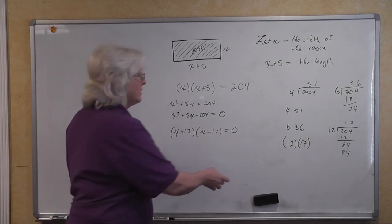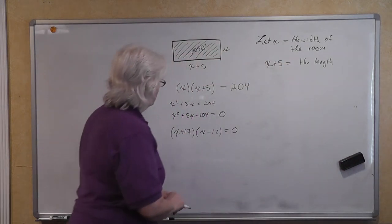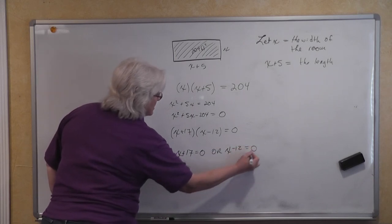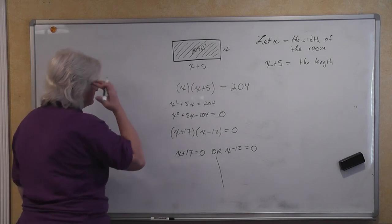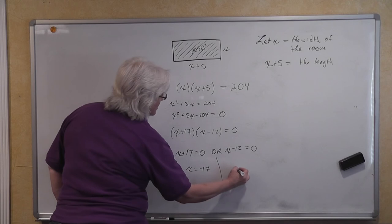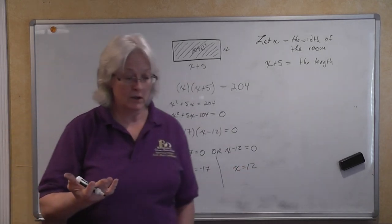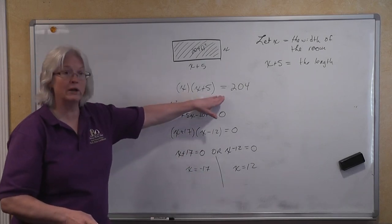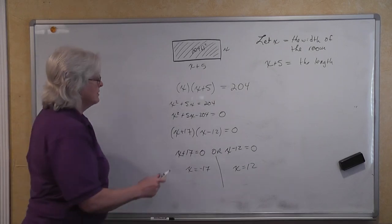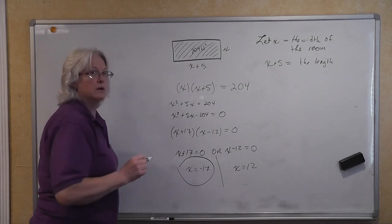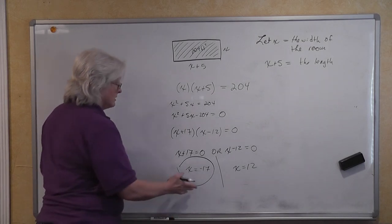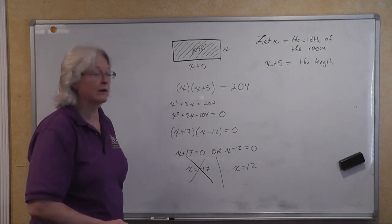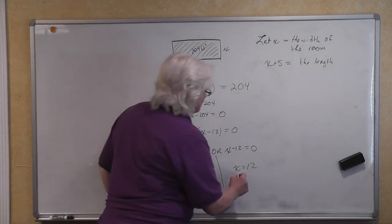Applying the zero product property: either x plus 17 equals zero or x minus 12 equals zero, giving x equals negative 17 or x equals positive 12. But are both solutions valid? No — we have an extraneous solution. Length can never be a negative number, so x equals negative 17 is rejected. Therefore x equals 12 is the value for our variable.